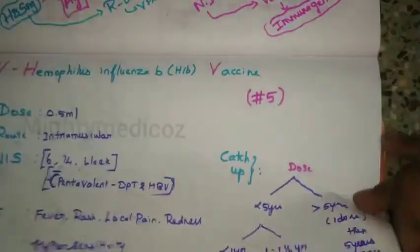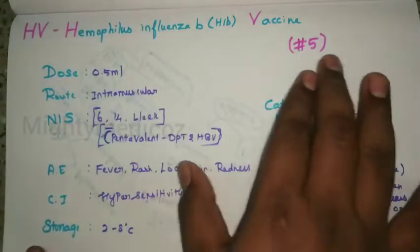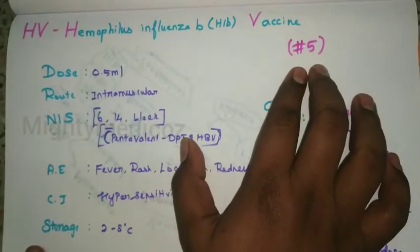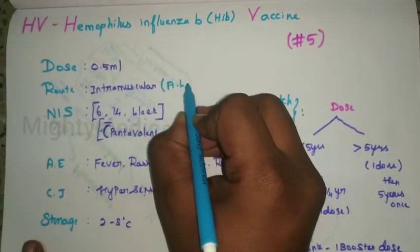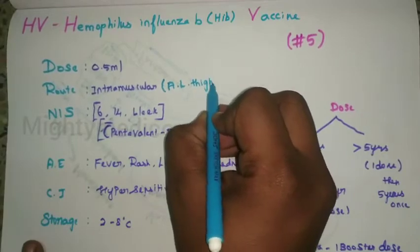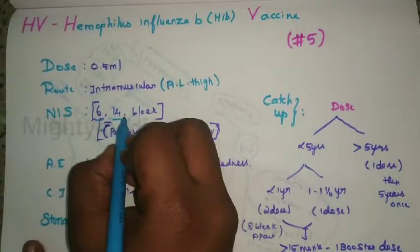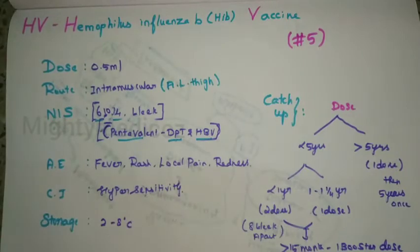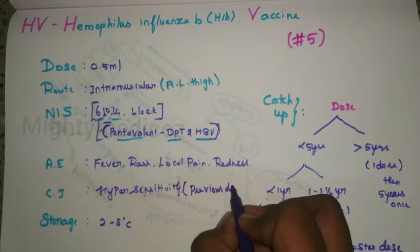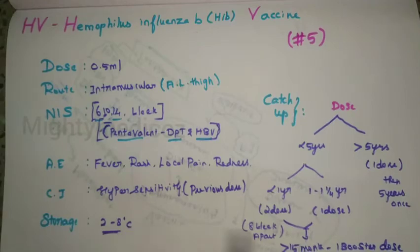Looking at the dose: it is 0.5 mL, administered via the anterolateral aspect of the thigh. Under the national immunization schedule, pentavalent — which includes DPT and HBV — is given at 6, 10, and 14 weeks. Adverse effects include fever, rashes, local pain, and redness. Contraindications include hypersensitivity and anaphylactic reaction to a previous dose. Storage is at 2 to 8 degrees Celsius.